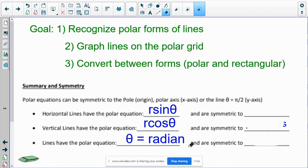But we also kind of need to talk about the symmetry. So if you have horizontal lines going straight across, remember, we're changing it. It's no longer the x axis and the y axis and the origin. It's now the x axis is our polar axis.